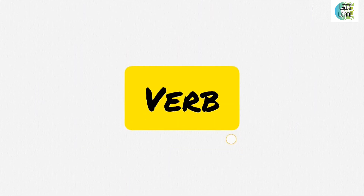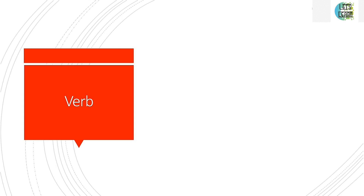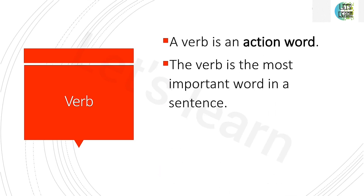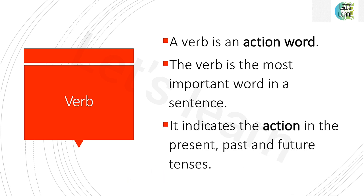So, what is a verb? A verb is an action word and the verb is the most important word in a sentence. It indicates the action in the present, past and future tense. So, verb is nothing but it is an action word. For example,